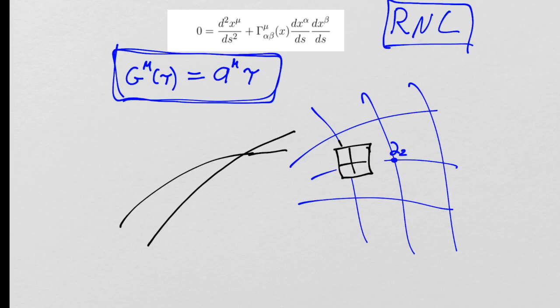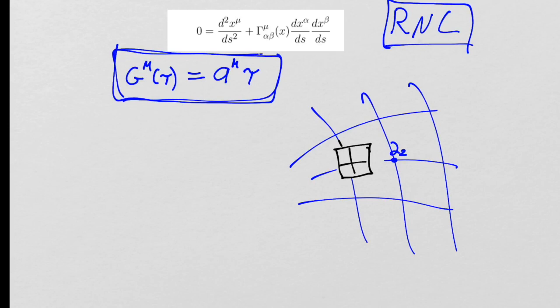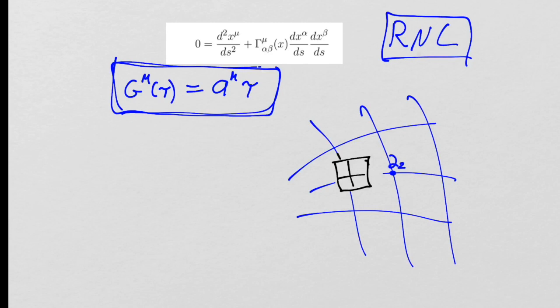Once we realized that, we asked: because we constructed the system using the geodesic equation, we substituted the straight-line form into the geodesic equation and solved for the connection coefficients of our Riemann normal coordinate system. This is a good exercise in doing this kind of mathematics. General relativity has a lot of mathematical language that is highly non-unique.